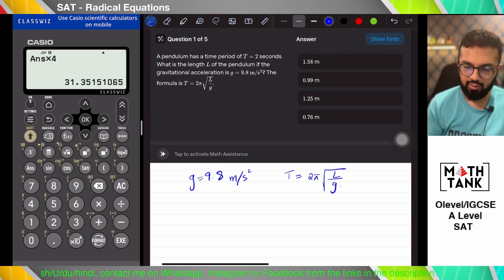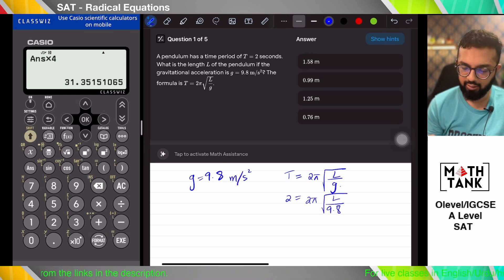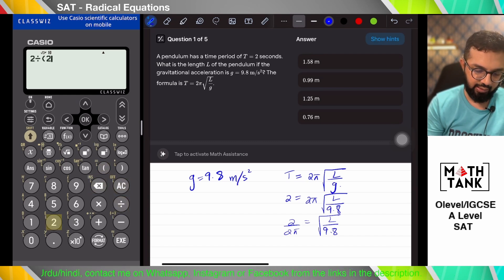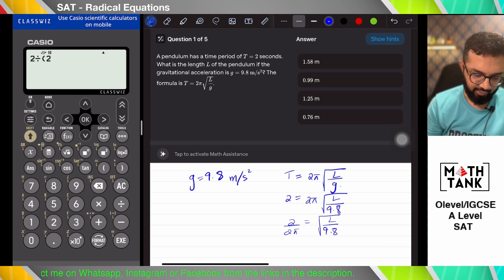The formula is t equals to 2 pi root of l over g. Okay, length is something that I want to find. 2 pi root of l is something that I want to find, 9.8. So 2 over 2 pi. Again, I could do all of these equations on my solver, but I am just doing these manually so that anyone who doesn't have this calculator can also follow.